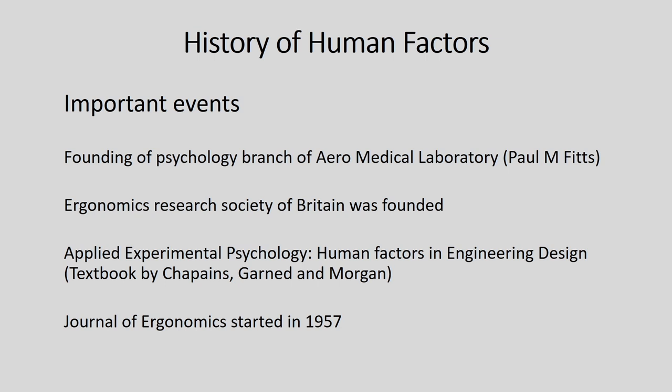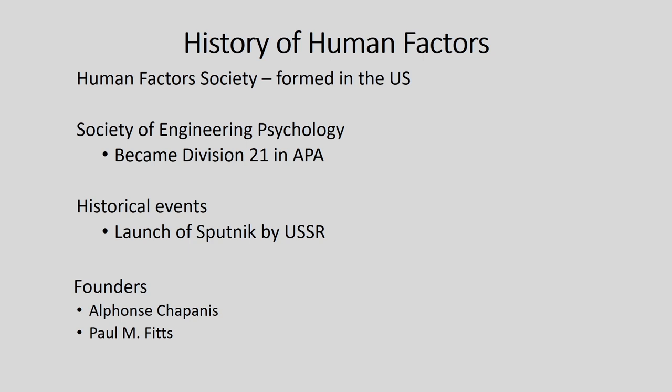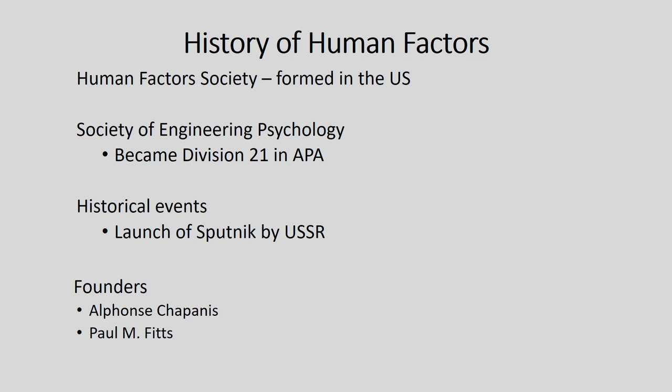Another landmark is the founding of the Ergonomic Research Society of Britain, which was another important event in the engineering psychology domain. The first book of Applied Experimental Psychology: Human Factors in Engineering Design was published by Chapanis, Garner, and Morgan. The Journal of Ergonomics was started in 1957, which also marked a major step in furthering the engineering psychology discipline. The Human Factor Society was formed in the United States and the Society of Engineering Psychology, which became Division 21 in the American Psychological Association, were two further events in the development of the field. Some historical events such as the launching of the Sputnik by the former USSR also led to the development of this field.